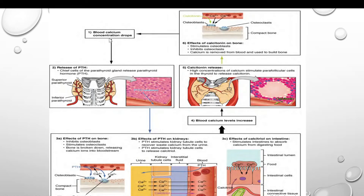When blood calcium concentration is low, this stimulates production of parathyroid hormone. The effects of PTH are: first, calcium is released from bone; second, the kidney tubules reabsorb maximum calcium into the blood; third, the kidney produces the active form of vitamin D3 — calcitriol — which promotes calcium absorption in the intestine.